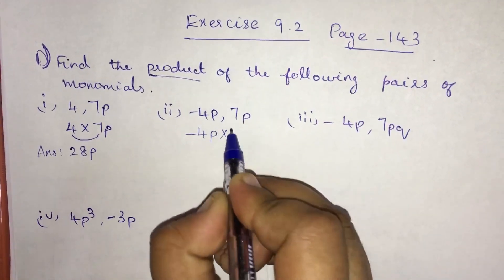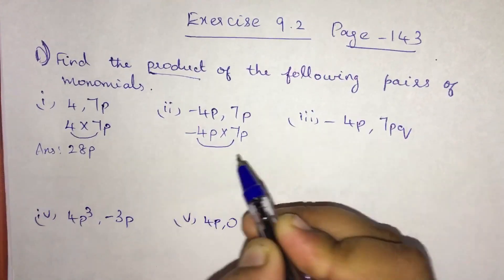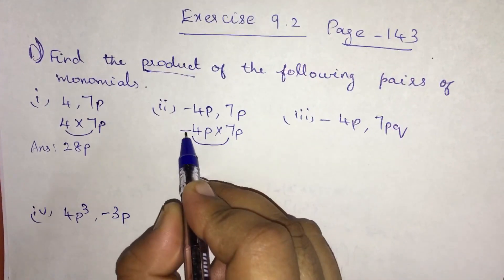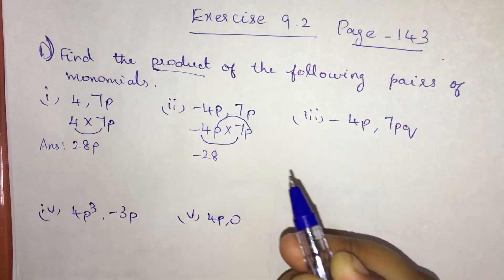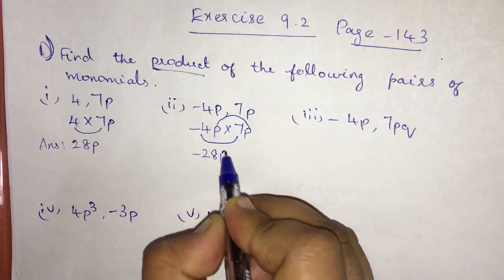It is minus 4p into 7p. Multiplying the numbers: minus 4 into 7 is minus 28. Multiplying the variables: p into p is p square.